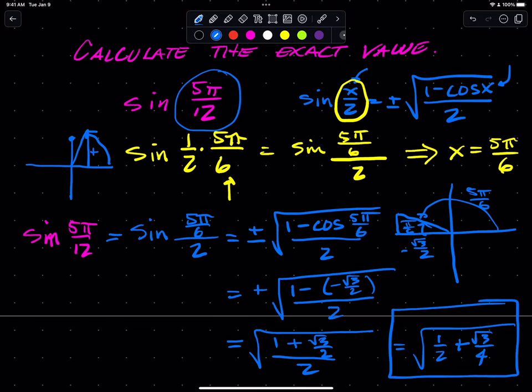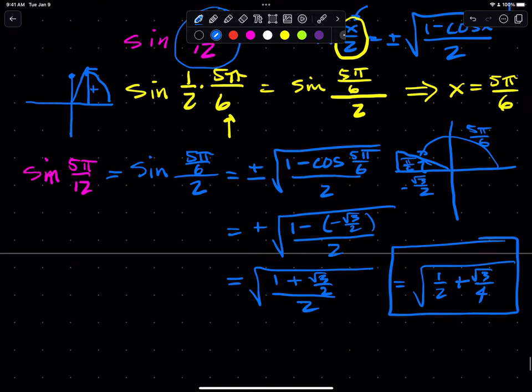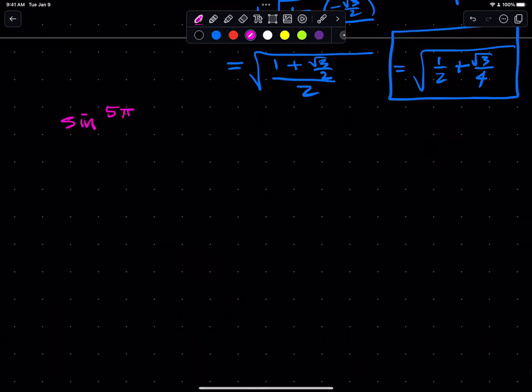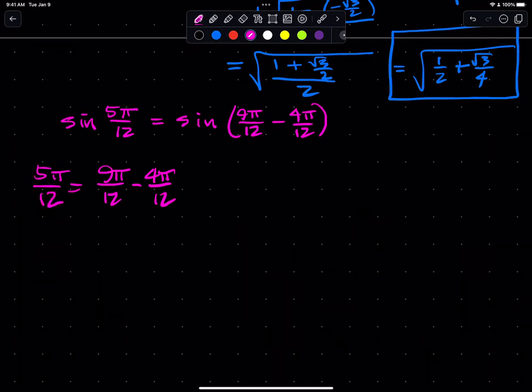Let's look at using the sum and difference identities to do similar work with the same problem. So remember, sine 5π over 12. I have to try to turn this into something minus something, like 9π over 12 minus 4π over 12. Why does that work? Because 9π over 12 minus 4π over 12 is equivalent to 5π over 12. So if I do it that way, that means I'm using the difference identity for sine.